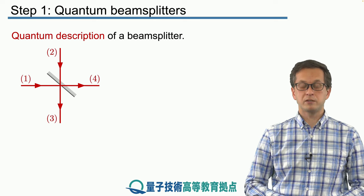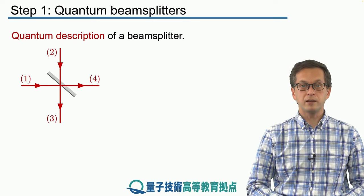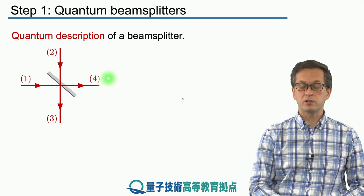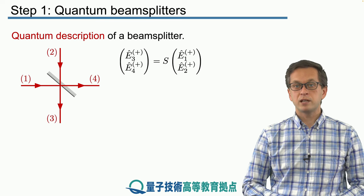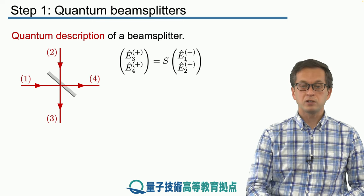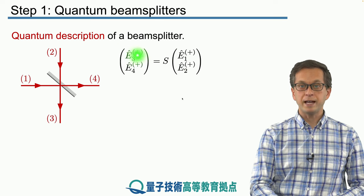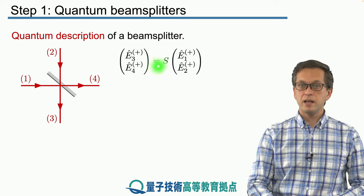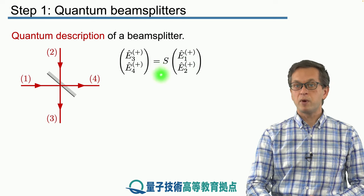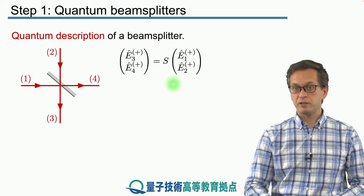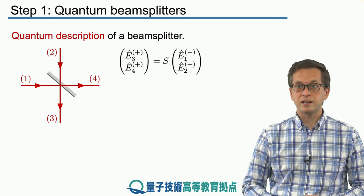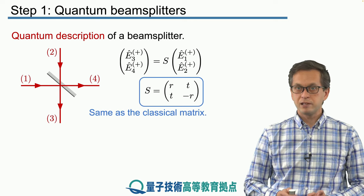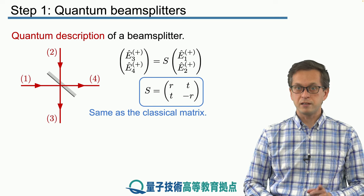So how do we describe a quantum beam splitter? The situation is the same: we have two input ports 1 and 2 and two output ports 3 and 4, and we want to know how the field operators transform. We can write them in vector form, where the output operators Ê3 and Ê4 are related to the input operators E1 and E2 by some transformation beam splitter matrix. This matrix turns out to be the exact same as the classical matrix — which sounds a little too good to be true, so let's test that it really works.